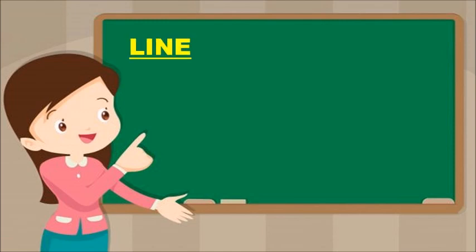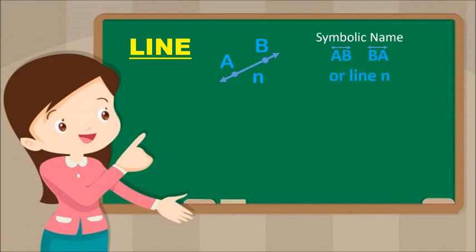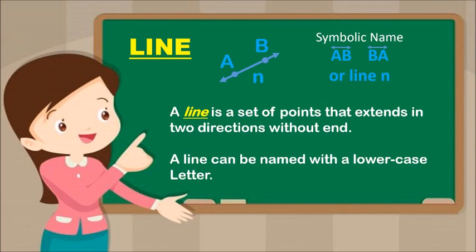Next is Line. As you can see in the picture, there is a line with two points A and B, and the line is called N. The symbolic name is Line AB, or Line BA, or Line N. A line is a set of points that extends in two directions without end. A line can be named with a lowercase letter.